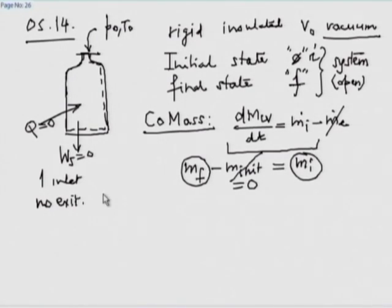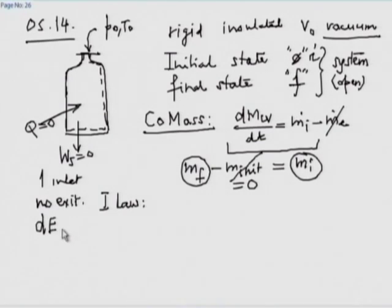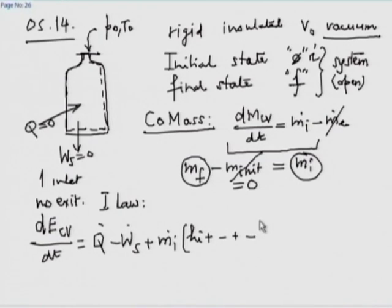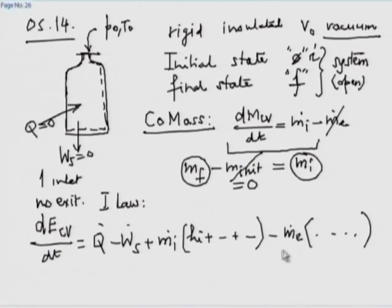Now let us apply the first law. Let me write it in reasonably full form: d(e_CV)/dt = Q_dot minus W_dot_s plus m_dot_i times (h_i + v_i²/2 + g*z_i), minus the exit terms — but we do not have to bother because nothing goes out.